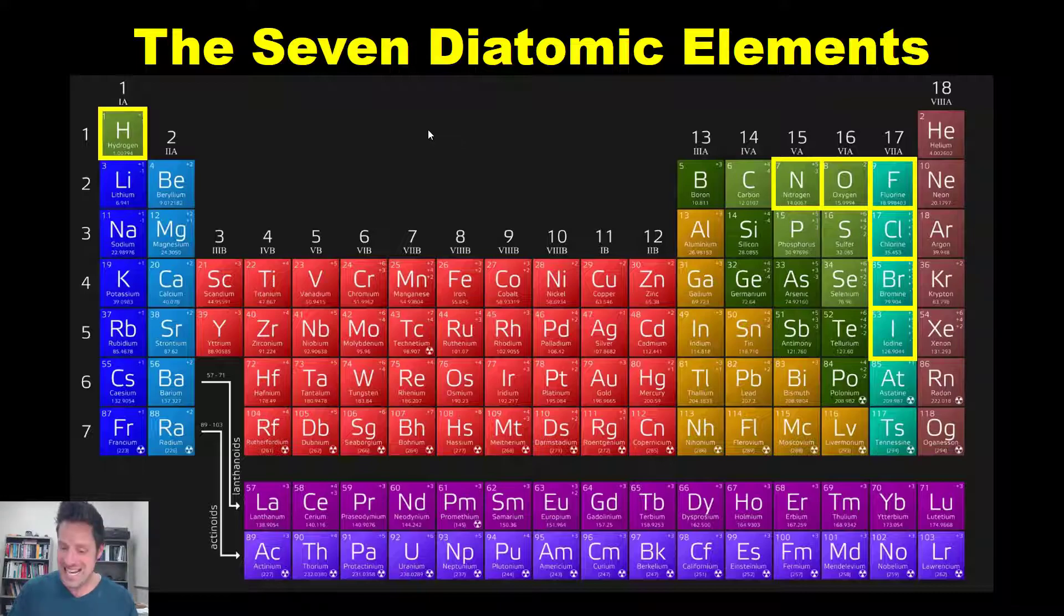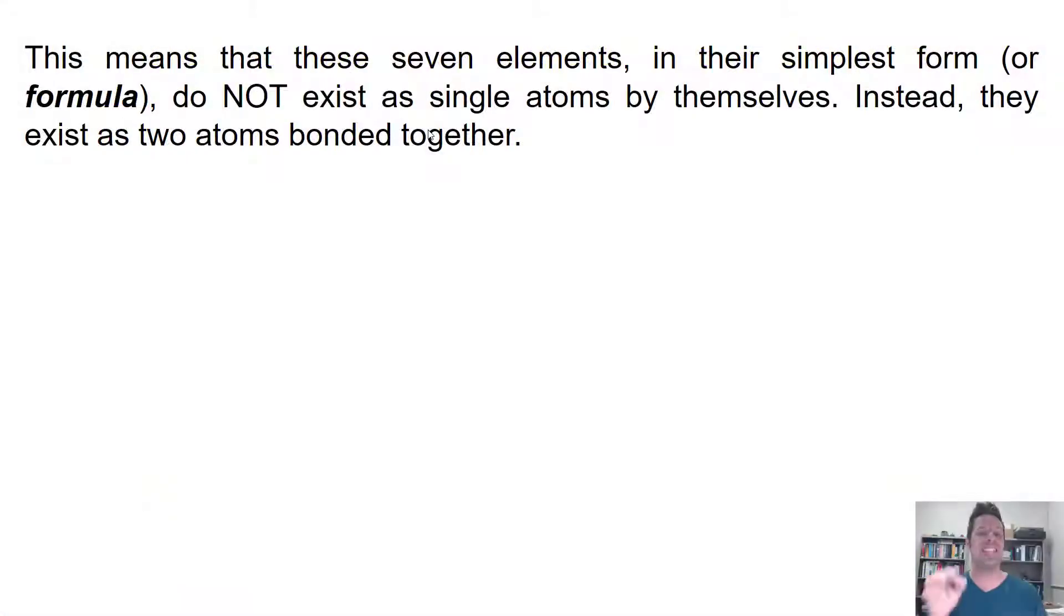Now, what does this mean? Well, this means that these seven elements in their simplest form or formula do not exist as single atoms by themselves. Instead, they exist as two atoms bonded together. For example,